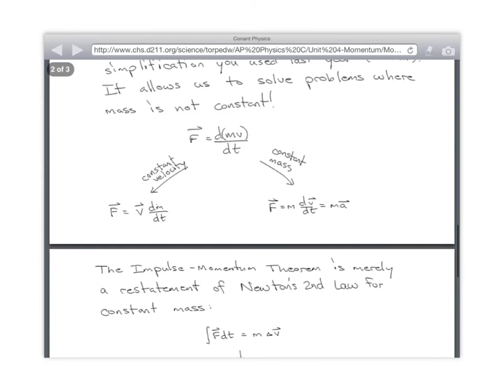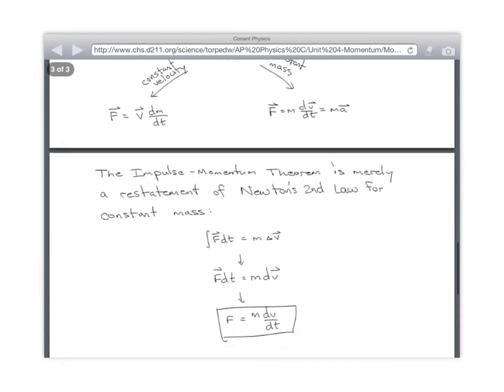Impulse momentum theorem. If we know that impulse momentum theorem is integral of F dt equals m times the total change in velocity. But if you get rid of the integral sign, you're just saying F times a little piece of time equals m times a little tiny change in velocity. Pull the dt over to the other side, and you get F equals m dv over dt. Impulse momentum theorem is just Newton's second law restated, which is kind of cool.